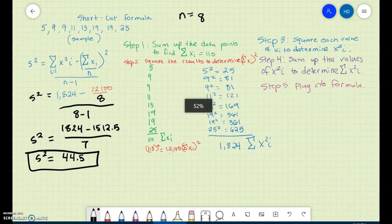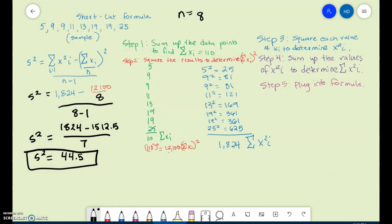And then to get the standard deviation, all you have to do is take the square root of the variance. So S equals the square root of 44.5. I may have rounded to the nearest hundredths, but my variance is 44.5 and my standard deviation is 6.67.